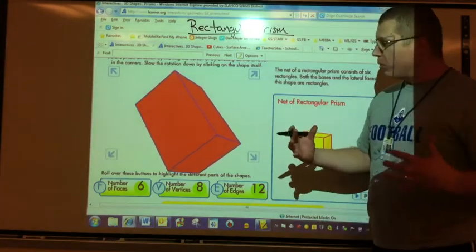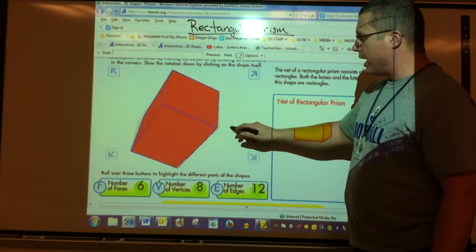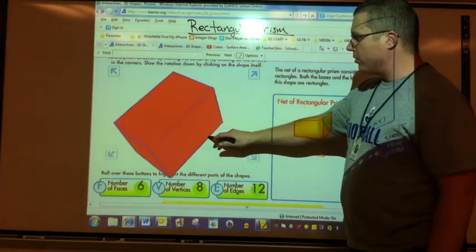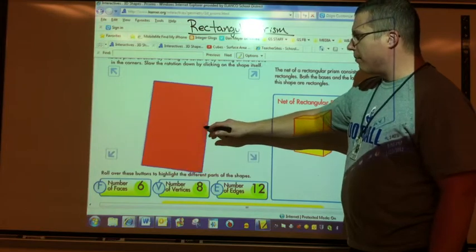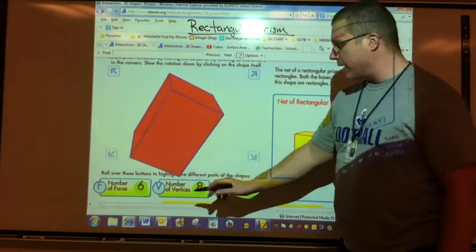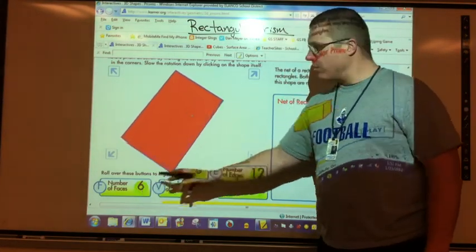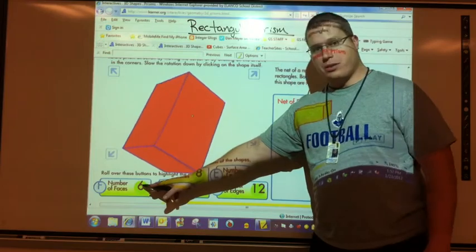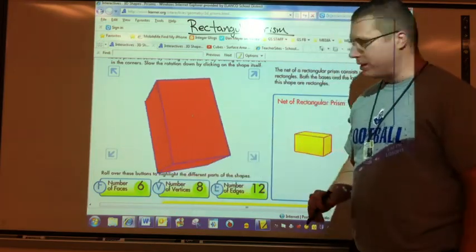A rectangular prism looks like a rectangle on the side. So if I take a look at this shape, I can spin it around. You'll see that there are long sides and there are short sides. I can't stop this object, but if you could, you would be able to take a look at the number of faces that it has. Same number as the cube does. There are six faces to it. Four along the side, top and bottom give you six.